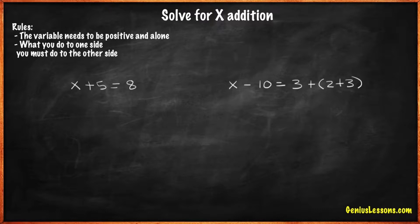As we can see, we have two sides: the side on the left and the side on the right. We need to have the variable x alone on one side. In order to do this, we will subtract 5 from both sides.